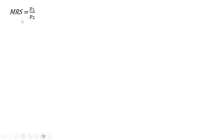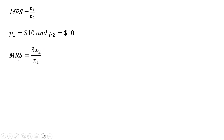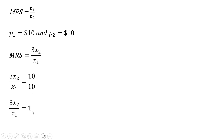To maximize utility, the marginal rate of substitution equals the ratio of the price of good 1 to the price of good 2 — this is where the indifference curve is tangent to the budget line. Since both prices are $10, the right-hand side simplifies to 1. Cross multiplying gives us good 1 equals 3 times good 2.